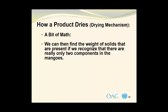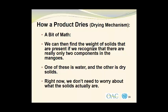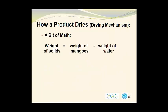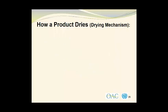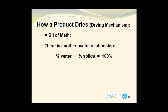We can then find the weight of solids present by recognizing that there are only two components in the mangoes: water and dry solids. The weight of solids equals the weight of the mangoes minus the weight of water — that is 240 grams minus 206.7 grams — giving us 33.3 grams of solids. There is also a useful relationship: the percentage water plus the percent solids equals 100%. If it isn't water, it's solids.